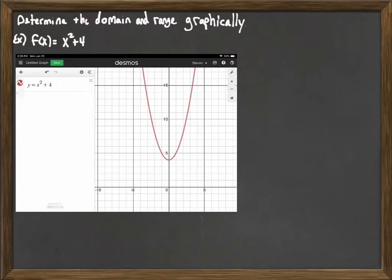Now remember the domain is talking about our x values. As we look at the graph here we can see that we're really taking on every possible x value in both directions, because that graph is going to continue both to the left and to the right. So we're taking on every possible x value. Our domain will be all real numbers.